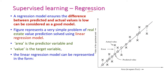First, let us see what is a regression model. A regression model measures the difference between predicted value and the actual value. If the difference is very low, then this model is called a good model. Let us explain with a real estate example. If the area increases, then the value of the apartment will also increase. Area is represented on the x-axis and on the y-axis we have the value of the apartment.